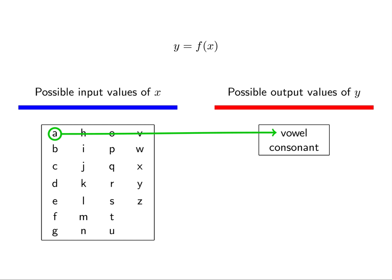Our function should return the value vowel when the input to the function is A, E, I, O, or U.